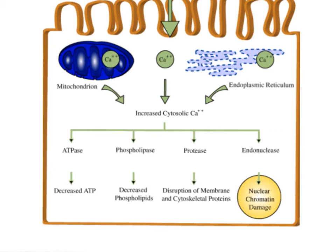In this example, you can see sources of increased cytosolic calcium: the mitochondria, the endoplasmic reticulum, and calcium that's external to the cell. The consequences of this increased cytosolic calcium include activation of ATPase, phospholipase, protease, and endonuclease. ATPase causes decreased ATP. Phospholipase causes decreased phospholipids. Protease causes disruption of membrane and cytoskeletal proteins. And endonuclease causes nuclear chromatin damage. So an injurious agent causes damage to the cell, which releases calcium, causing decreased ATP, decreased phospholipids, disruption of membrane and cytoskeletal proteins, and nuclear chromatin damage.